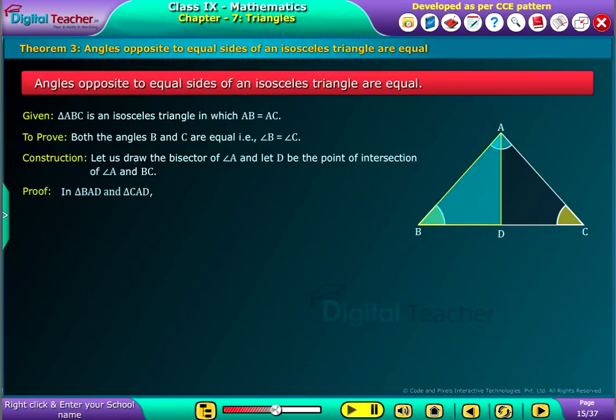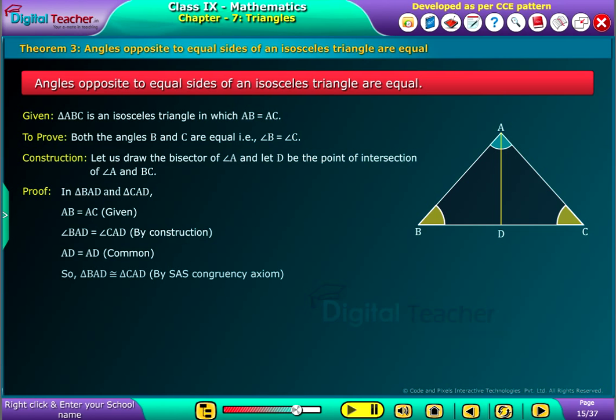Proof: In triangle BAD and triangle CAD, AB is equal to AC (Given), angle BAD is equal to angle CAD (by construction), AD is equal to AD (common).